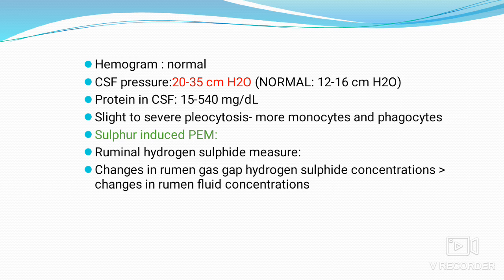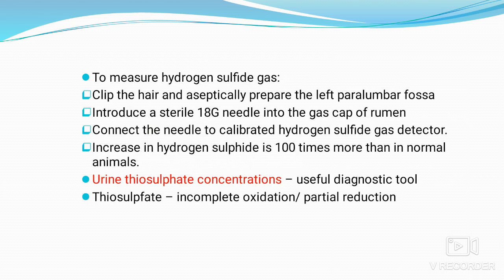In sulfur-induced PEM, it is essential to assess rumenal hydrogen sulfide gas. Changes in rumen gas cap sulfide concentrations are greater than changes in rumen fluid concentrations. To measure: clip the hair in the left paralumbar fossa, prepare aseptically, introduce a sterile 18-gauge needle into the gas cap of the rumen, and connect the needle to a calibrated hydrogen sulfide gas detector. Hydrogen sulfide in affected animals is 100 times higher than in normal animals. Urine thiosulfate concentration is also a useful diagnostic tool — thiosulfate is a result of incomplete oxidation or partial reduction of sulfide.